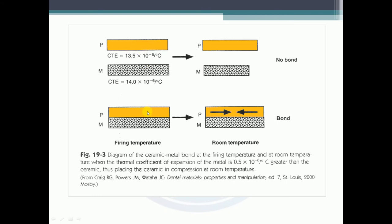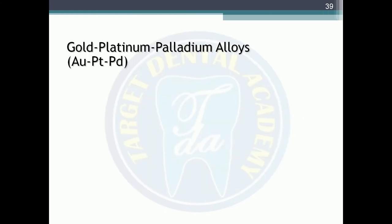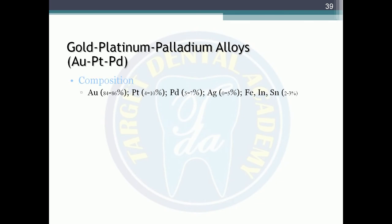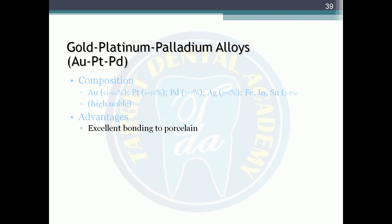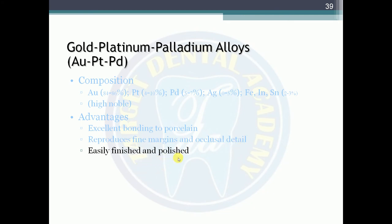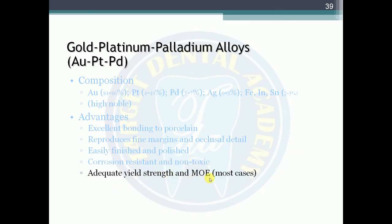Gold-platinum-palladium alloys composition: Au 84–86%, Pt 4–10%, Pd 5–7%, Ag 0–5%, iron/indium/tin 2–3%. These are high noble. Advantages: excellent bonding to porcelain, reproduces fine margins and occlusal details, easily finished and polished, corrosion resistant, non-toxic, adequate yield strain and modulus of elasticity.